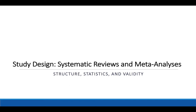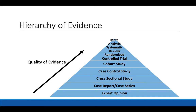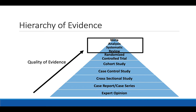Let's look at their structure, some of the statistics that they use, and the validity we can draw from these types of studies. Looking back at our hierarchy of evidence, we've covered everything from case reports through randomized controlled trials. Now we're going to look at pooling evidence from these lower levels into what are called systematic reviews or meta-analyses, which are widely considered the highest quality of evidence because they're composed of multiple RCTs or multiple observational studies.